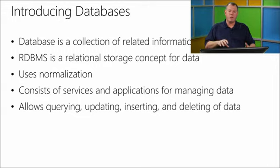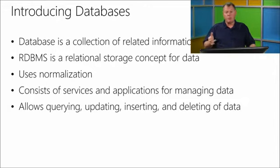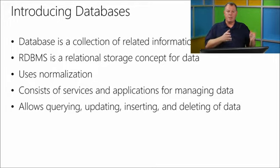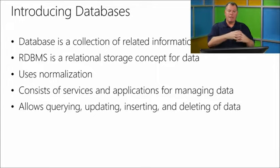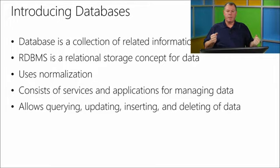Normalization deals with other aspects such as atomicity — making sure our data is complete and doesn't rely on other data stored in the table. Data also has to relate to the primary key that designates that specific information as a unique key within the table. What normalization does is create a system of storing data separated into multiple tables — sometimes known as multiple entities — in discrete pieces of information. We bring it all back together when we query the data by using relationships between the tables, through foreign keys.